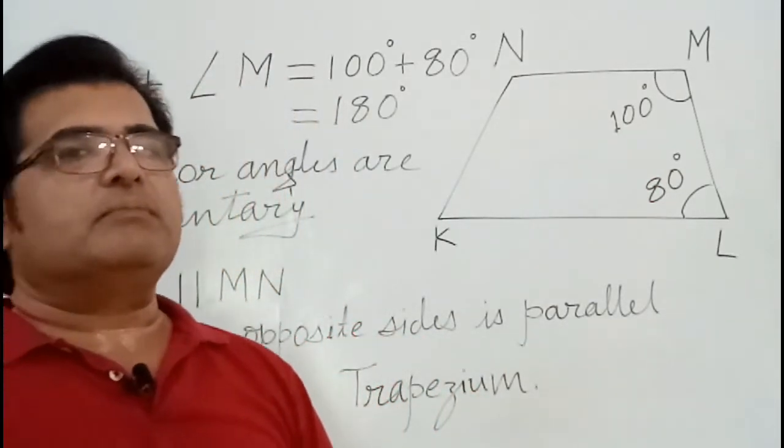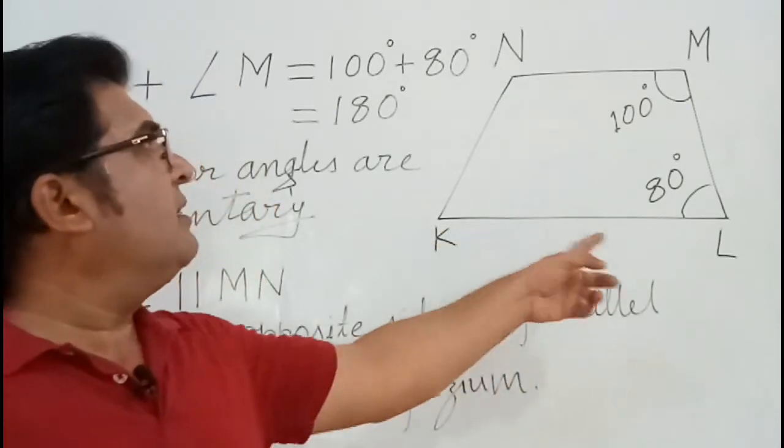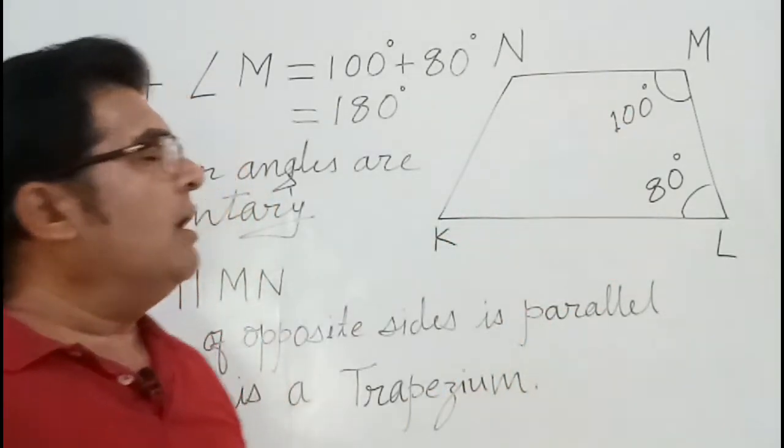KLMN is a trapezium, and the parallel sides are KL parallel to MN.